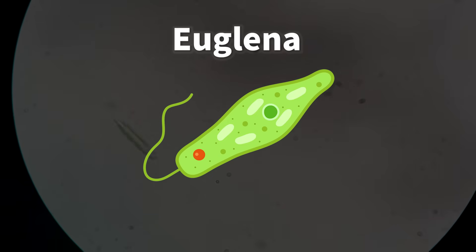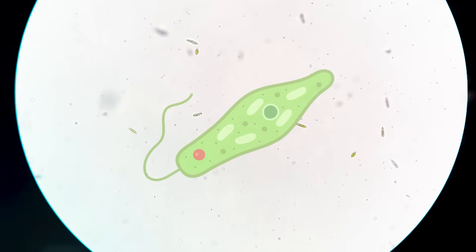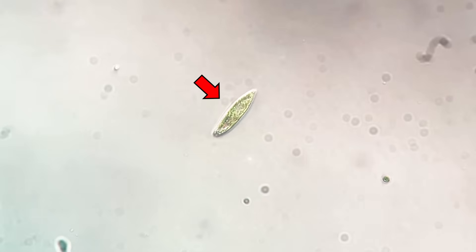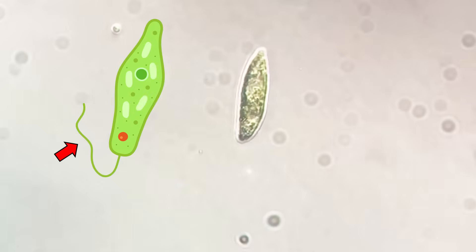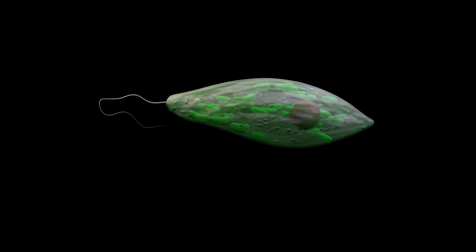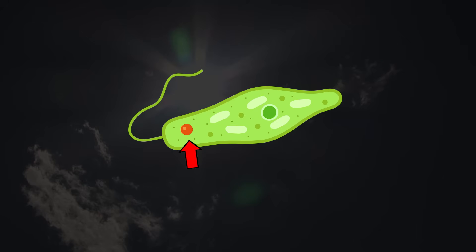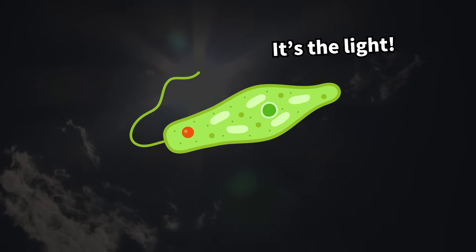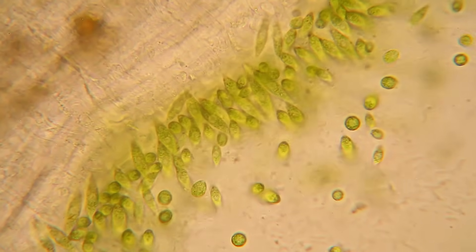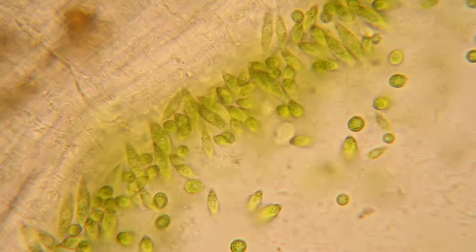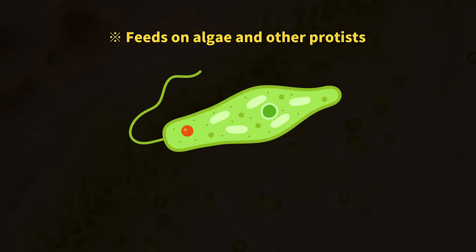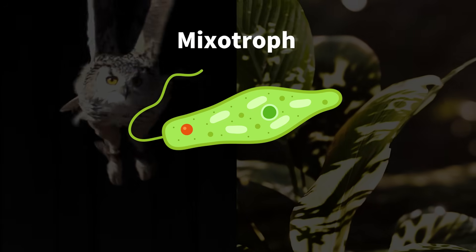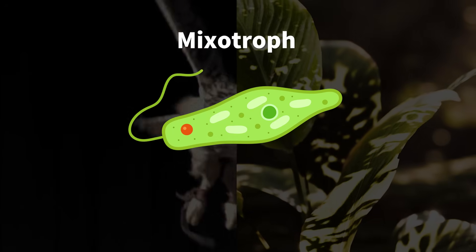Next is a creature called euglena. Euglena is especially unique. Look here — this green creature is euglena. When you look closely at a euglena, you'll notice something moving at the tip. Euglena has a flagellum at its front end, which it wiggles to swim around. Its green color comes from chloroplasts in its body. Thanks to a special light-sensitive spot called an eye spot, euglena can move toward the light and use photosynthesis to make its own nutrients. Even more surprisingly, when there's no light, it can hunt for food and take it into its body. Euglena is a truly unique organism that has both animal and plant characteristics.